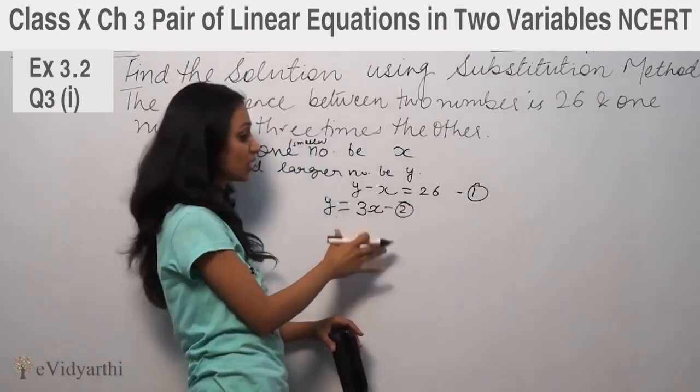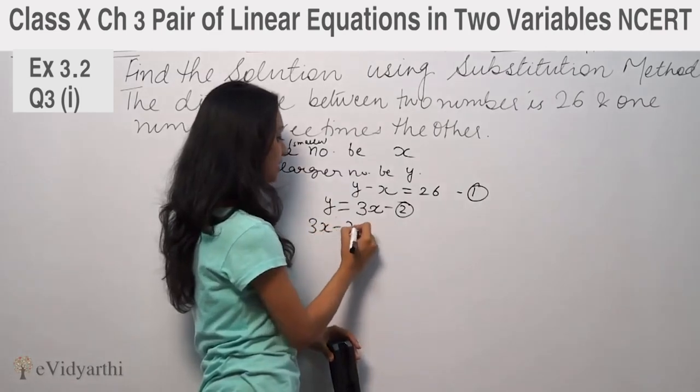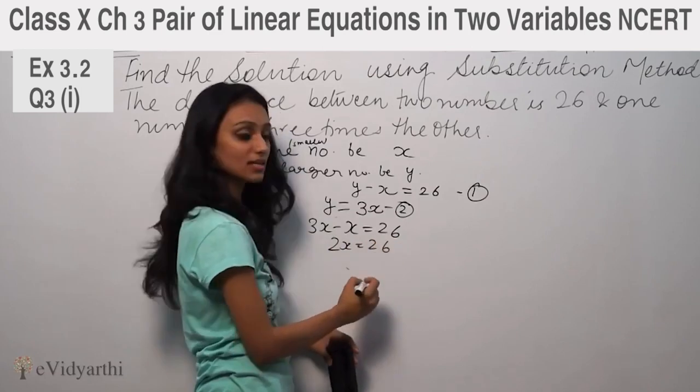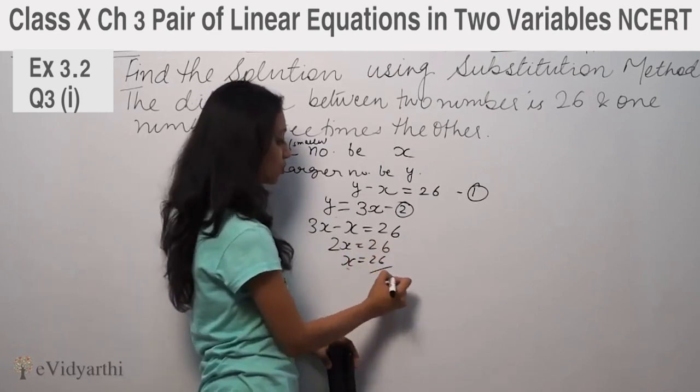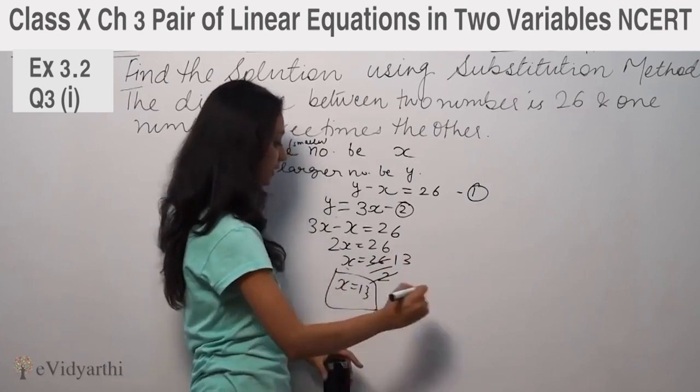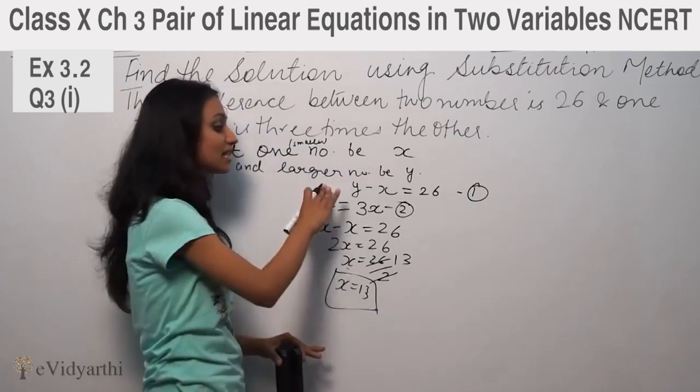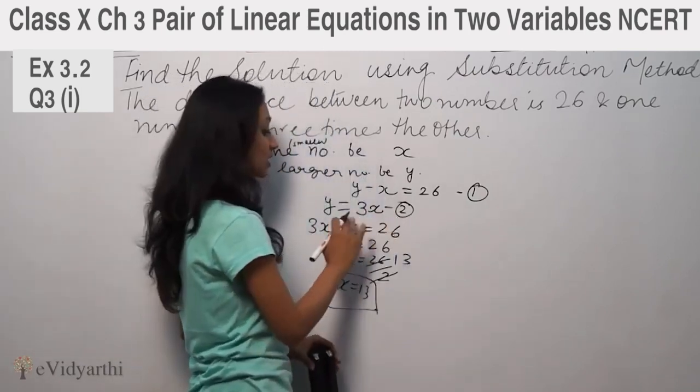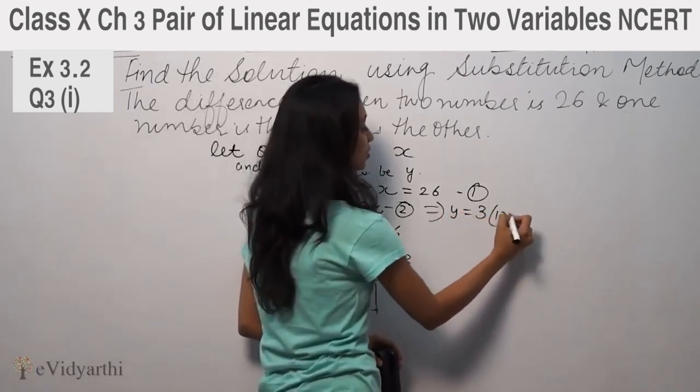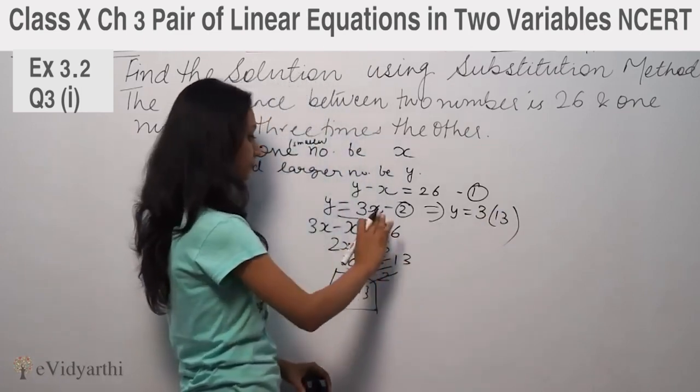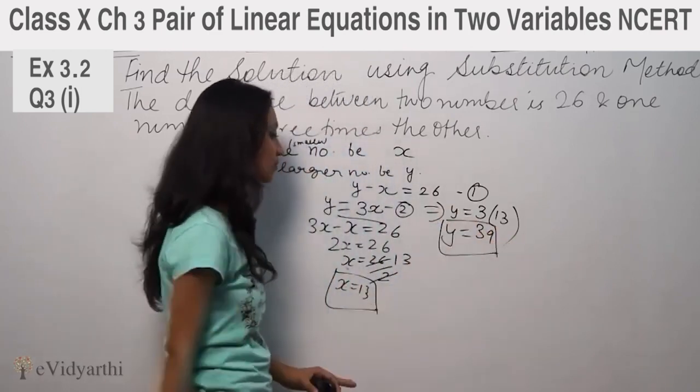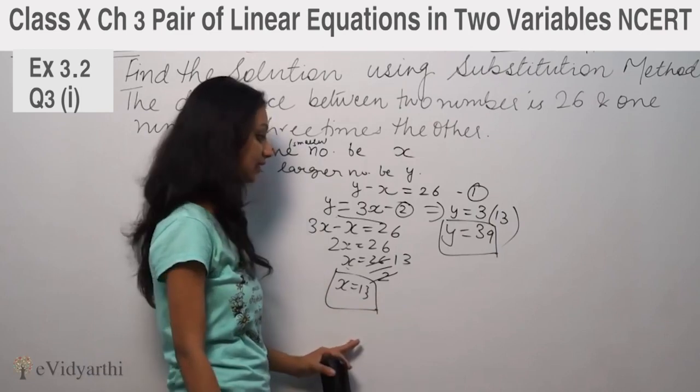3x minus x equal to 26, so 2x is equal to 26, x is equal to 26 divided by 2, x is equal to 13. So y is equal to, substituting x's value in the second equation, y is equal to 3 times x,